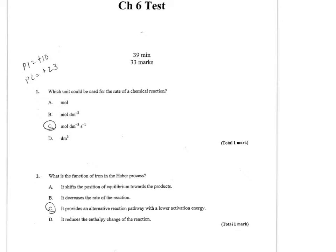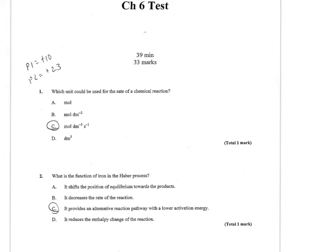Number 2 wants to know what's the function of iron in the Haber process. Even if you don't know anything about the Haber process and you know this test is on reaction rate, a good guess is that it's a catalyst. Since it's a catalyst, its job is to lower the activation energy and speed up the reaction by providing an alternative or easier pathway for the reaction to follow.